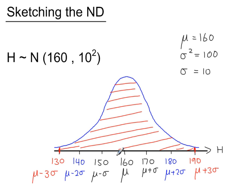Between these limits — 99.7% — which means 0.3% lies in the tails, which go to infinity in both directions.